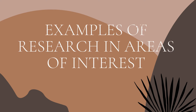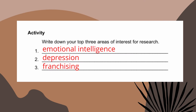This time, Lesson 4 is about examples of research in areas of interest. To start with, think of research topics that you find most interesting, then write down your top 3 areas of interest for your research. If I were asked to choose 3 topics, I would write emotional intelligence, depression, and franchising. Your chosen topic will of course depend on your field of specialization.